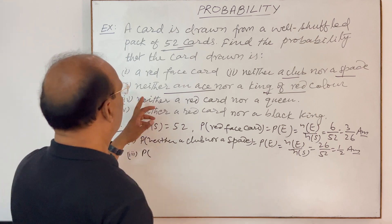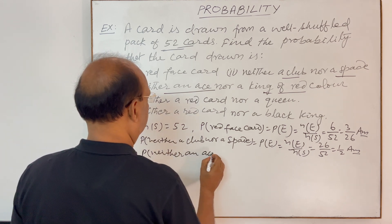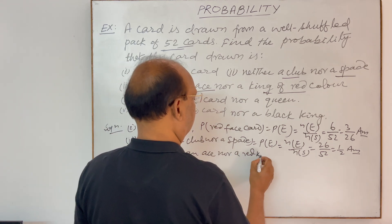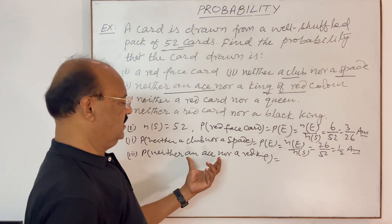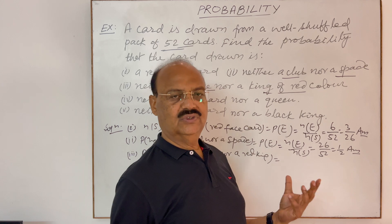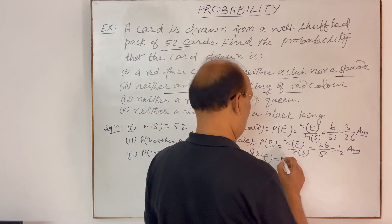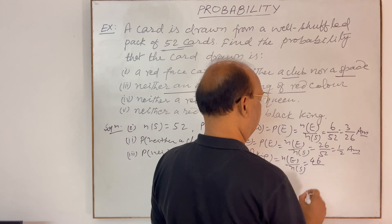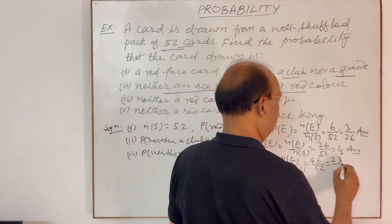The probability of neither an ace nor a red king: aces total 4, red kings total 2, so 4 plus 2 equals 6 will be subtracted from 52, giving 46. Using the formula n(E) divided by n(S), this is equal to 46 divided by 52, which is 23 divided by 26. This is the answer.